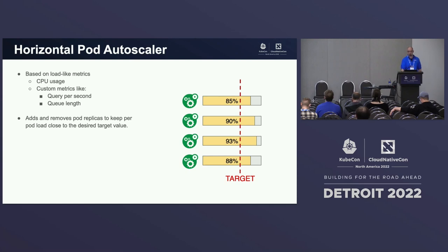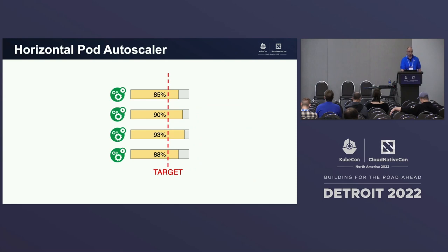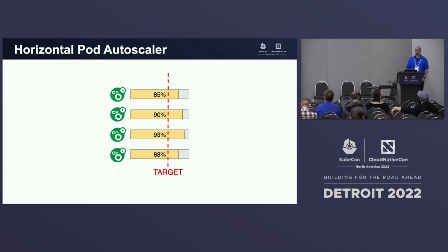Let's take a look at how this works in practice. Here, the metric will be utilization understood as the ratio between the actual CPU usage of a pod and the amount of CPU that the pod requested.